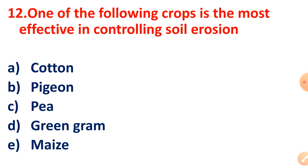Question 12: Which one of the following crops is the most effective in controlling soil erosion? The right answer is Option B, Pigeon.